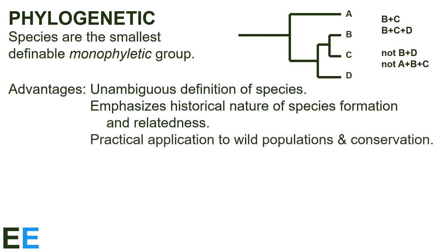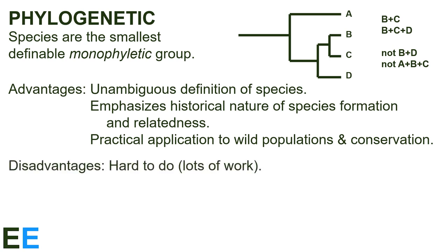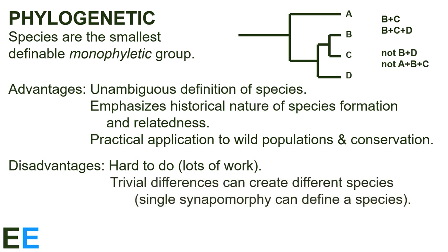Third, this definition has practical applications to wild populations and conservation biology. We can take DNA samples and identify whether at-risk populations are distinct monophyletic groups representing a whole different category of genetic diversity or species, or whether they're a set of individuals that are pretty much the same as some other group of species. If you've heard of DNA barcoding, this is what they're doing when they try to create a DNA barcode for different species. However, this definition also has several disadvantages. First, it can be hard to do the work required to define species this way — it involves DNA sampling and sophisticated computer programs to make the phylogenies. Most seriously, trivial differences can create different species because a single synapomorphy can define a species. Is a population with a single, unique synapomorphy really distinct enough for us to classify it as a separate species?